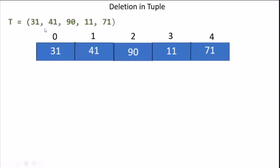Let's take a tuple with 5 values. In these 5 values, we want to delete one value from the tuple. So what do we do? We will slice these values from the left side and slice these values from the right side.